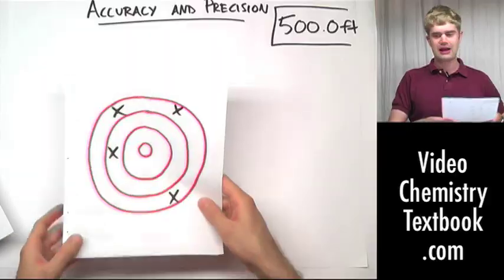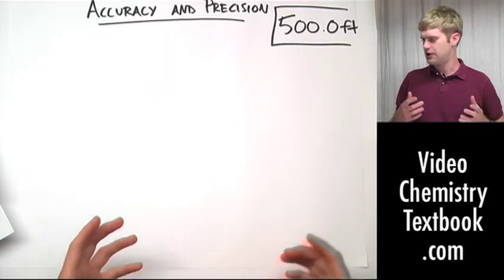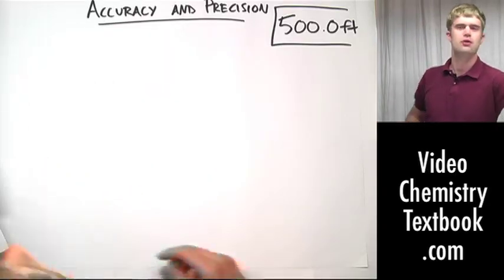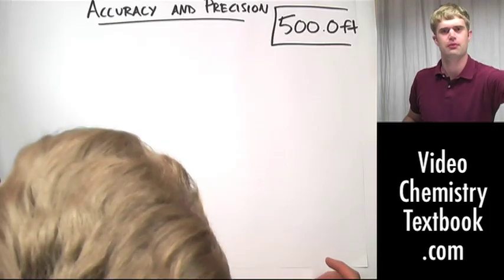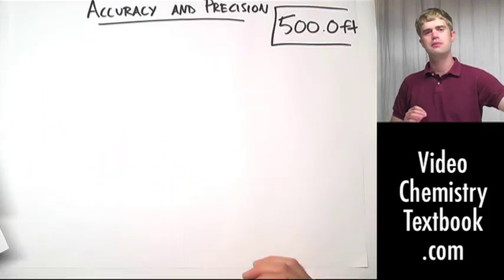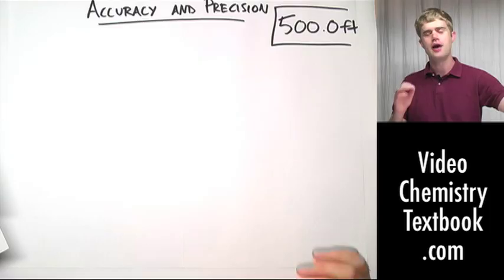So, we've looked at accurate, we've looked at examples that are accurate, precise, and so forth. Some of you may be wondering, what about a fourth example? Is it possible to be accurate but not precise?